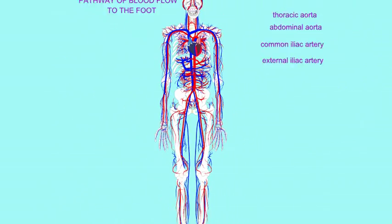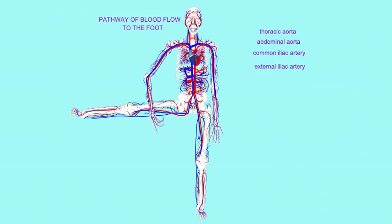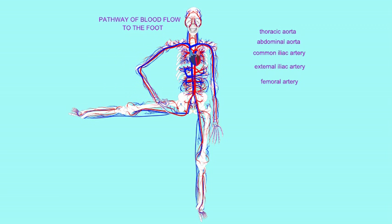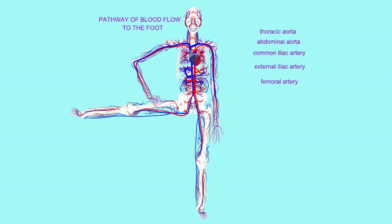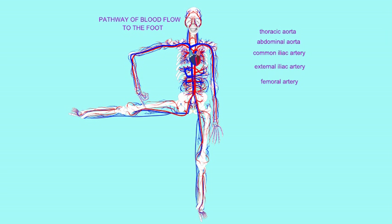Here it is known as the femoral artery, and the femoral artery passes along the thigh until it reaches one of the adductor muscles, and then it dives right through that adductor muscle through something known as the adductor hiatus.